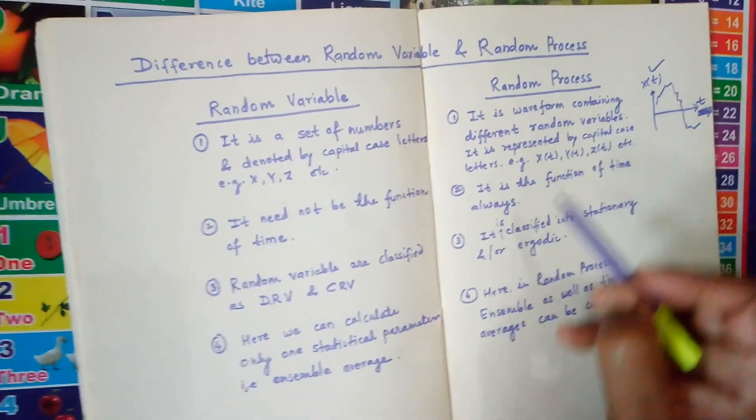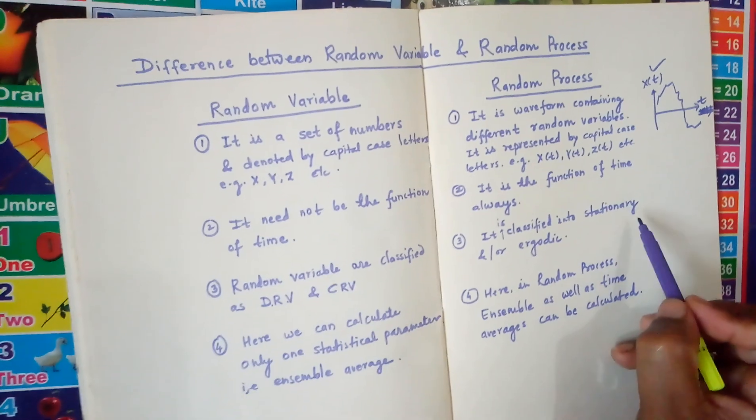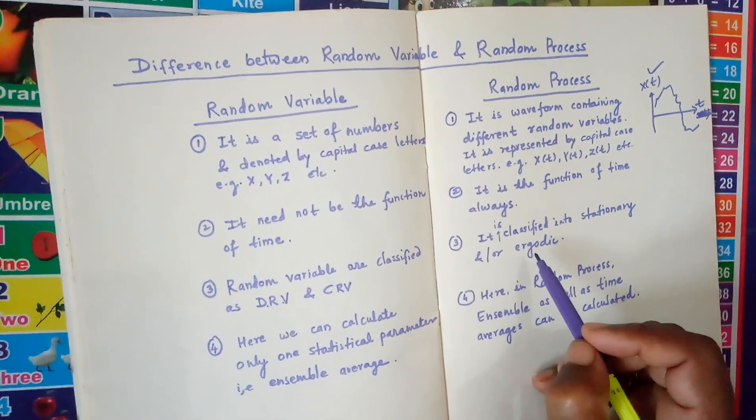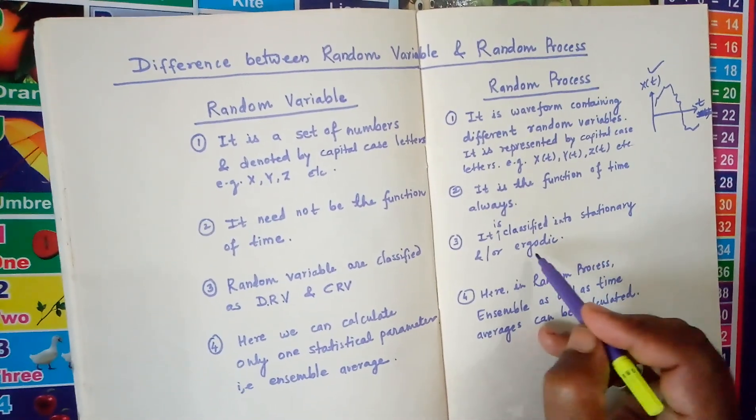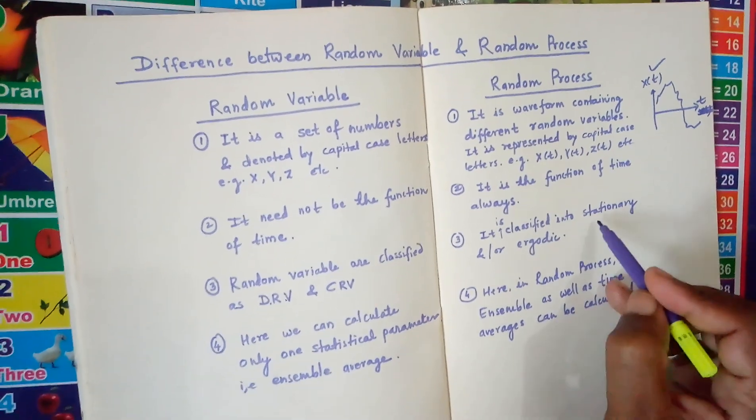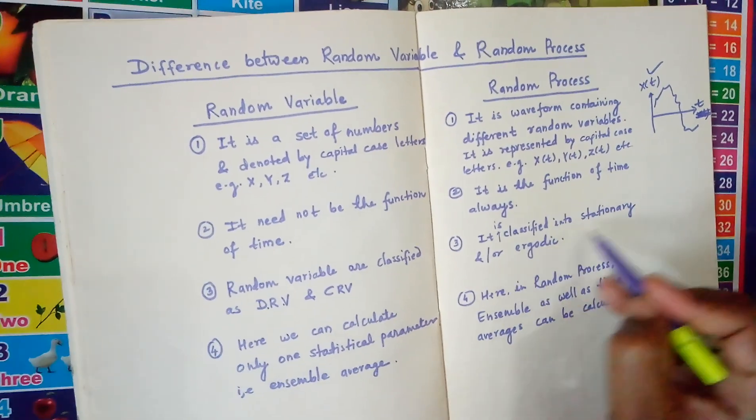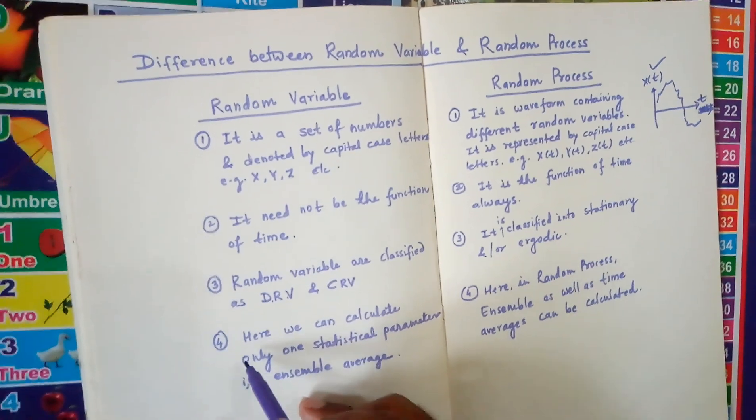Whereas the random process is classified into stationary and/or ergodic. Because we know the ergodic process is always stationary, but stationary process need not be ergodic.